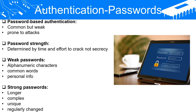Weak passwords typically include easy-to-guess or common elements. These may include alphanumeric characters in predictable sequences like 1-2-3-4-5-6 or A-B-C-D-E-F, common words like 'password' or 'admin', or personal information such as a pet's name, a birthday, or an anniversary date. These elements make a password easy to remember, but they also make it easier to guess or crack.